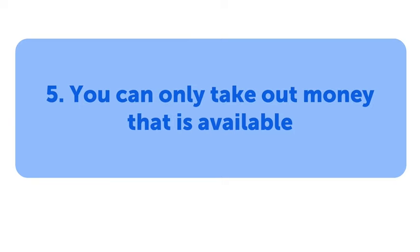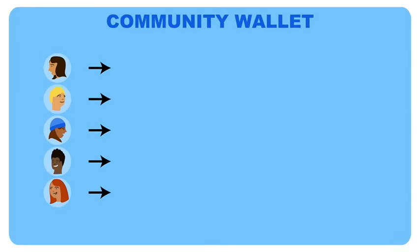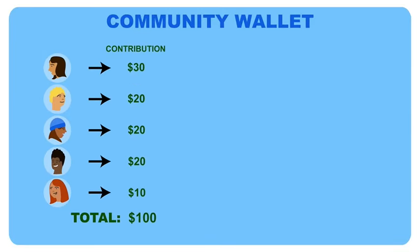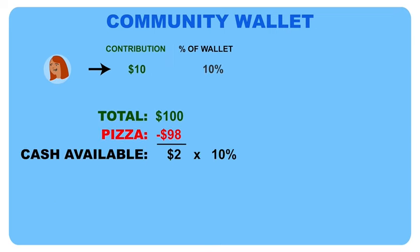Now, finally, Collective Truth number five. You can only take out money from the collective that hasn't already been spent. If, for example, your friend who didn't want pepperoni pizza wants to take their money out, they can. However, they can only take out cash that is available that has not already been spent on a proposal that passed.